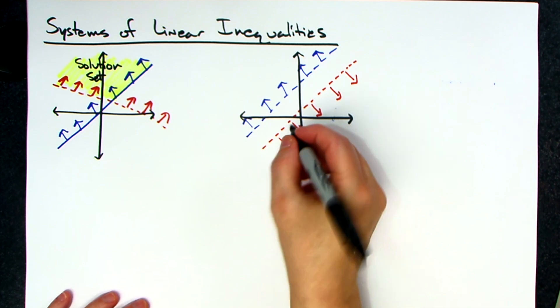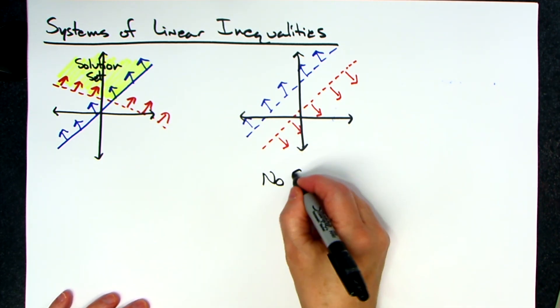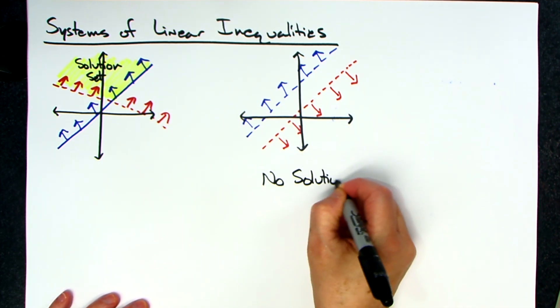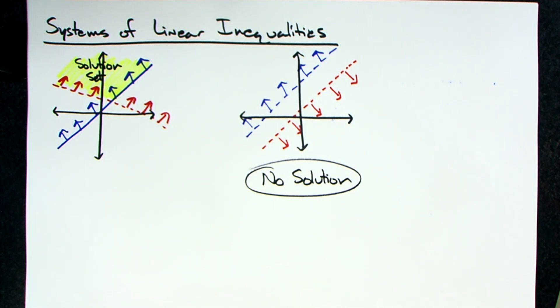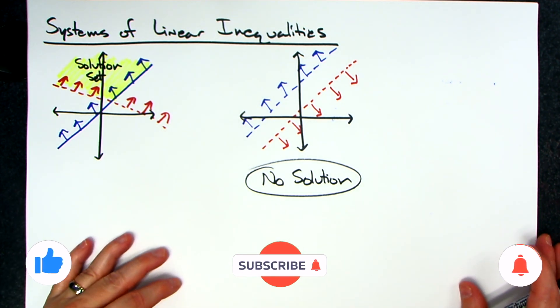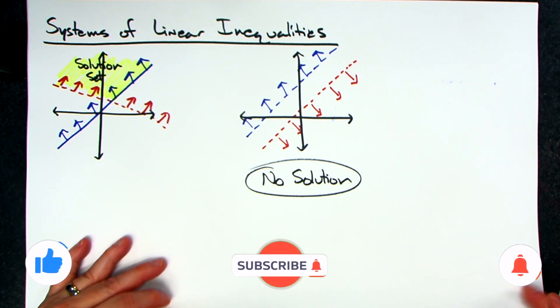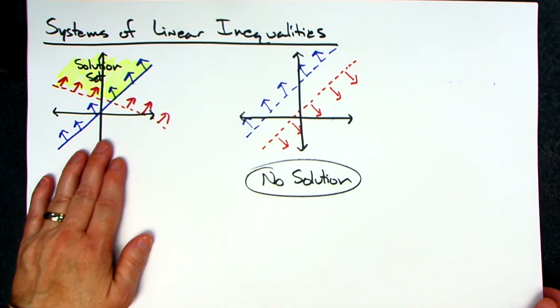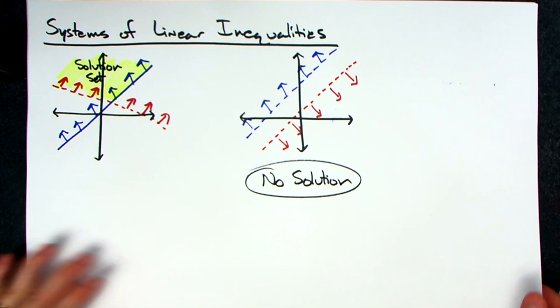There was no part that got shaded two times, so this one is your no solution. If no part of the graph gets shaded twice, there are no solutions for that particular system. Now let's go ahead and do one of the standard ones where we shade twice, and since we didn't do any in standard form, we'll do a couple here in standard form for our system.